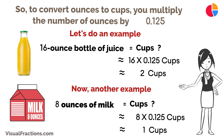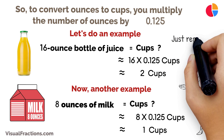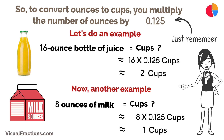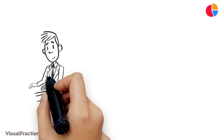And that's all there is to it. Just remember: one ounce is 0.125 cups. With a little practice, converting ounces to cups will become a quick and easy task, making your measurements accurate for any recipe or task.